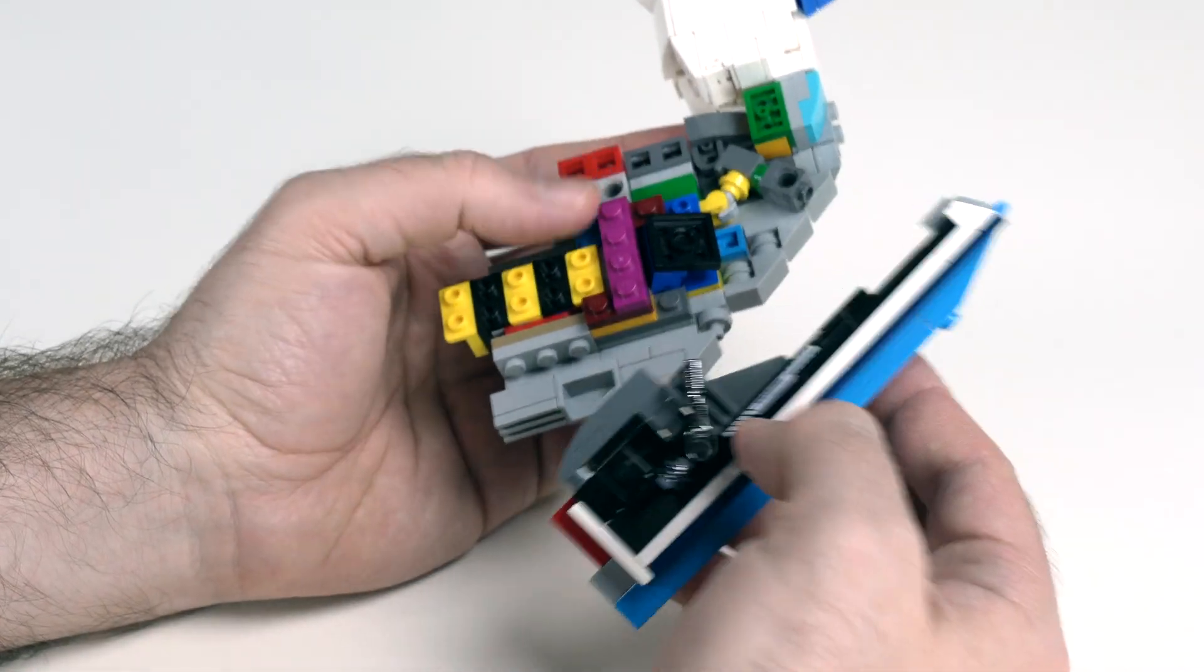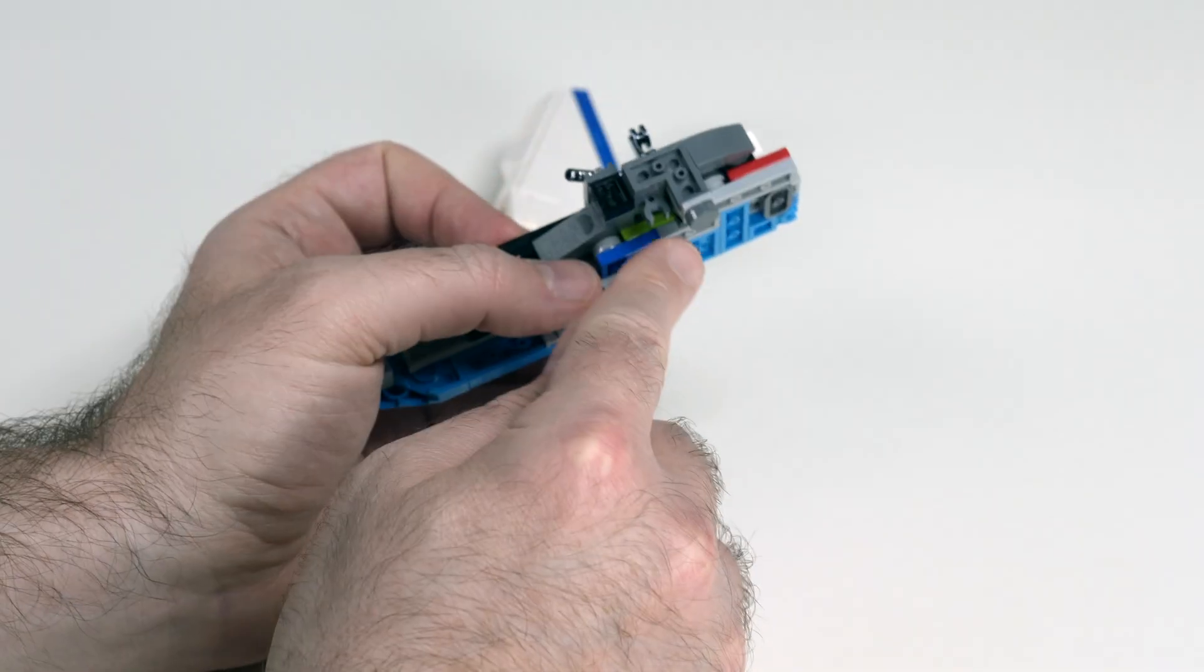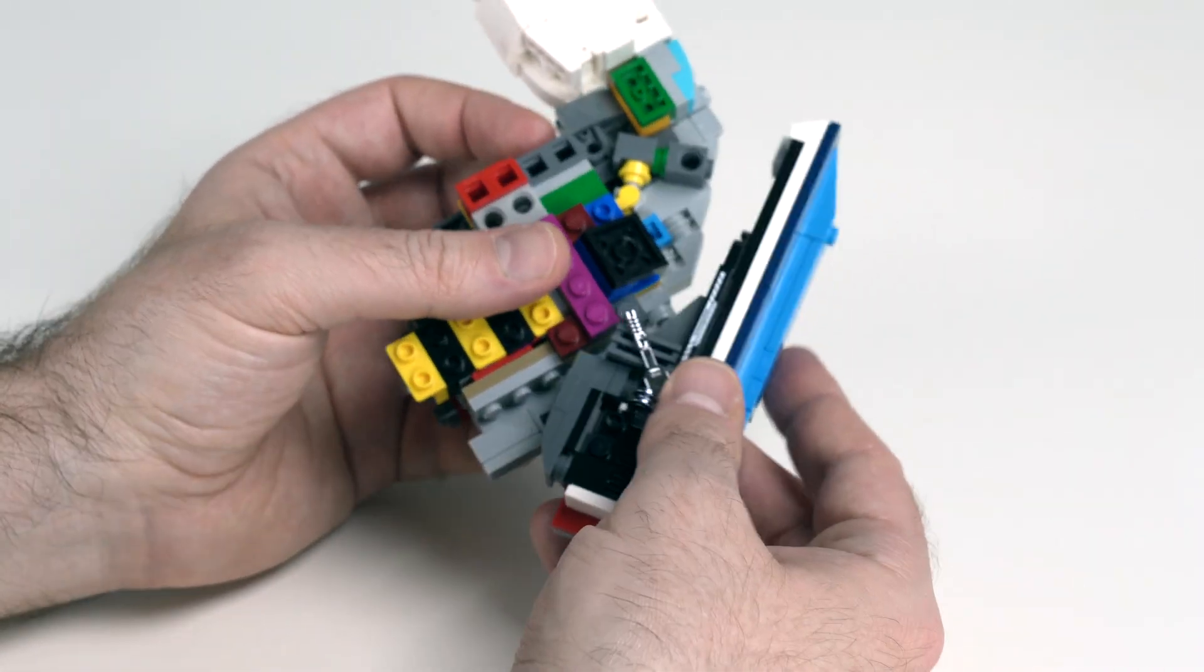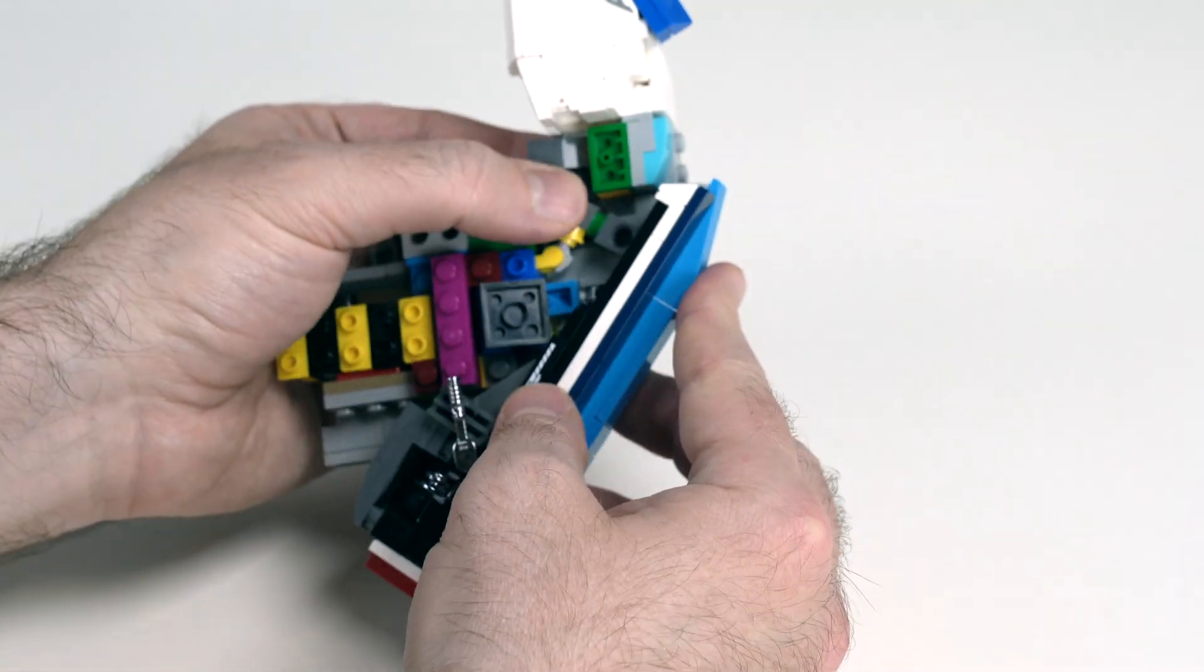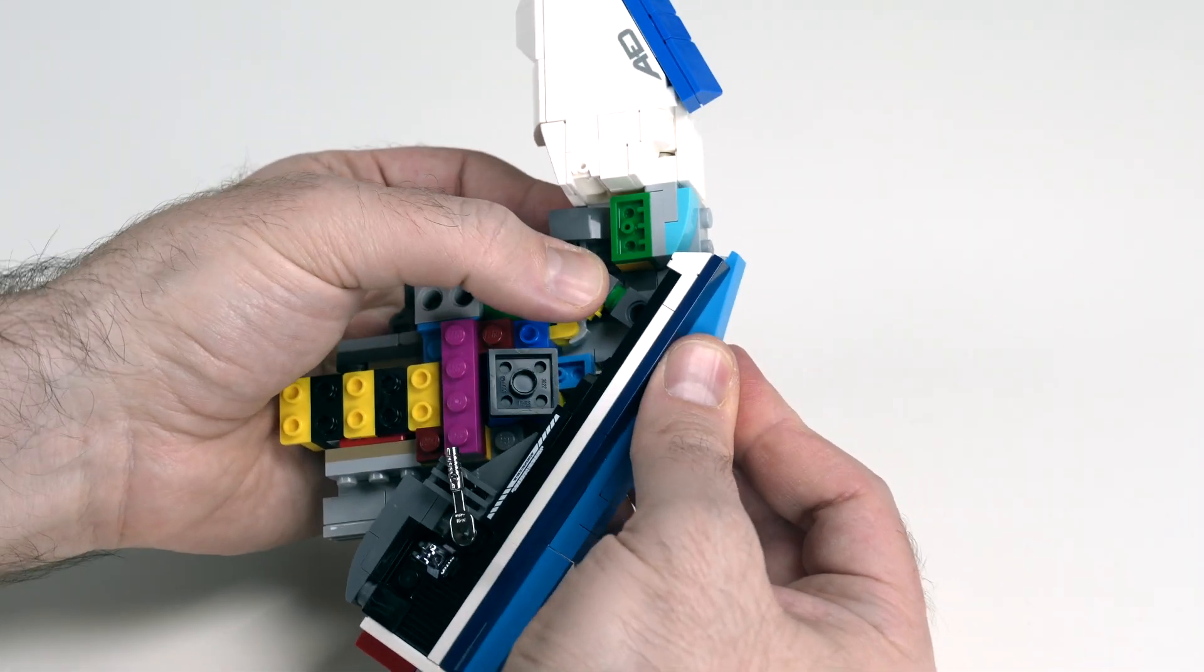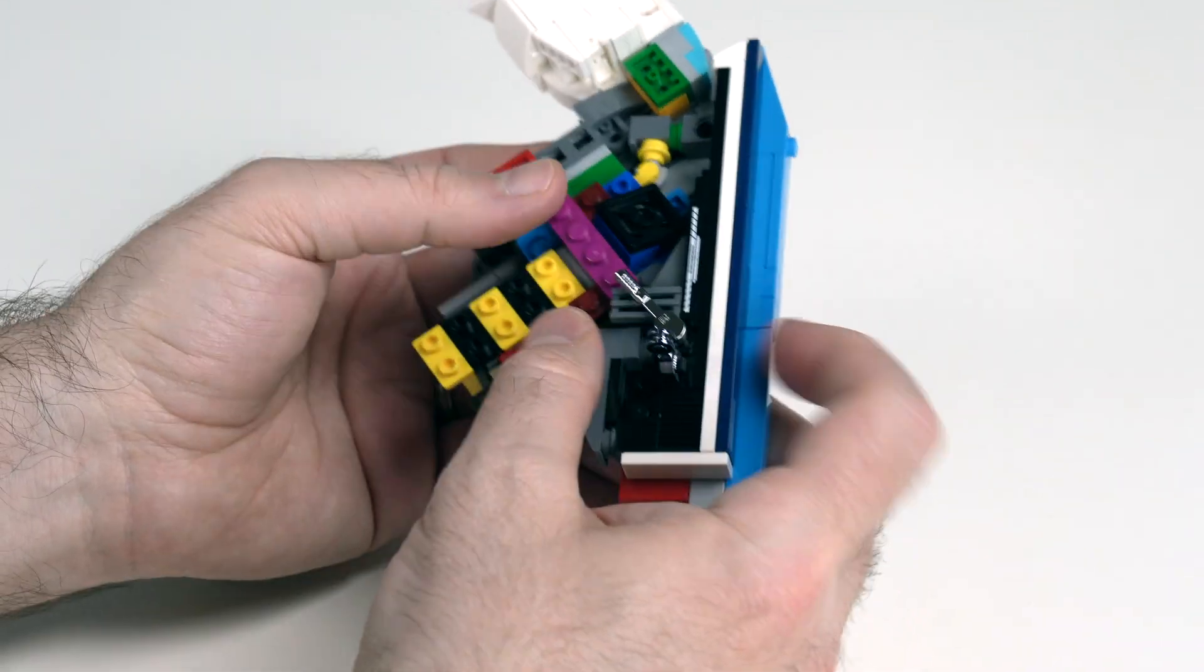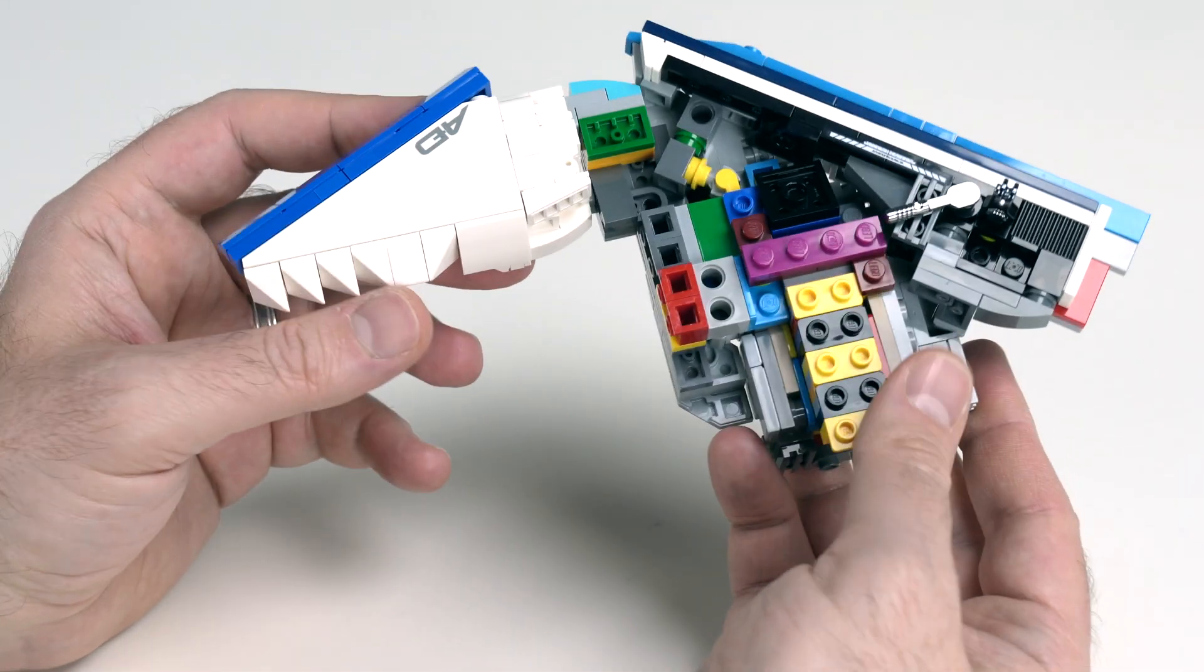And then that entire front unit then will connect up in here. When I do that, this bottom bit with the tile is going to ride in the channel of this panel. Nice. Okay. So it looks like this.